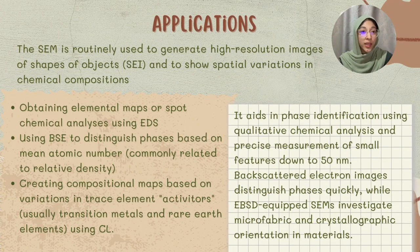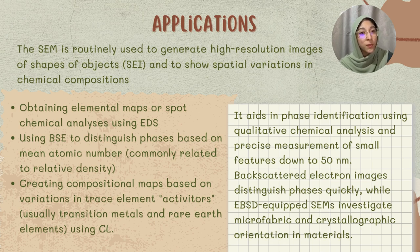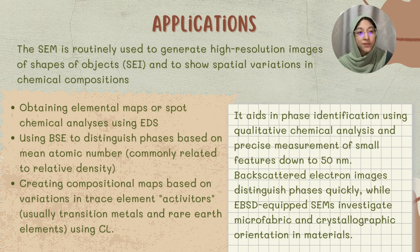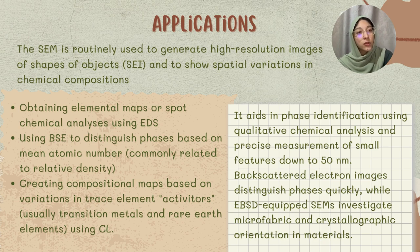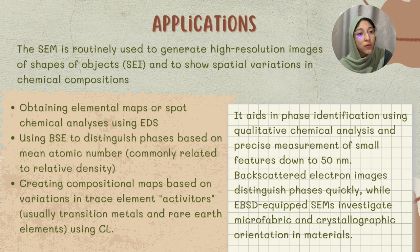Applications of the scanning electron microscope: SEM is used to obtain elemental maps or spot chemical analyses using EDS, and uses backscattered electrons to distinguish phases based on mean atomic number. SEM also creates compositional maps based on variation in trace element activators, and aids in phase identification using qualitative chemical analysis and precise measurement of small features down to 50 nanometers.